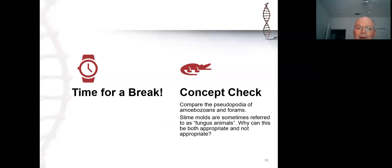Slime molds are sometimes referred to as fungus animals. Why can this be both appropriate and not appropriate? Like a fungus, slime molds penetrate into the food resource and feed by phagocytosis and absorption, particularly in the case of the plasmodial slime mold. They produce these thin extensions that penetrate into the food resource and allow them to feed on the food resource and maximize absorption. Like an animal, they can get together as a multicellular cooperative, migrating cell mass, the migrating slug, to move from one location to another. Why is this inappropriate?